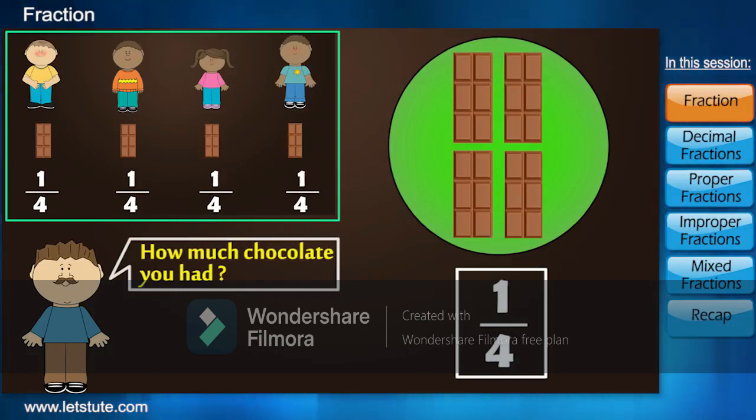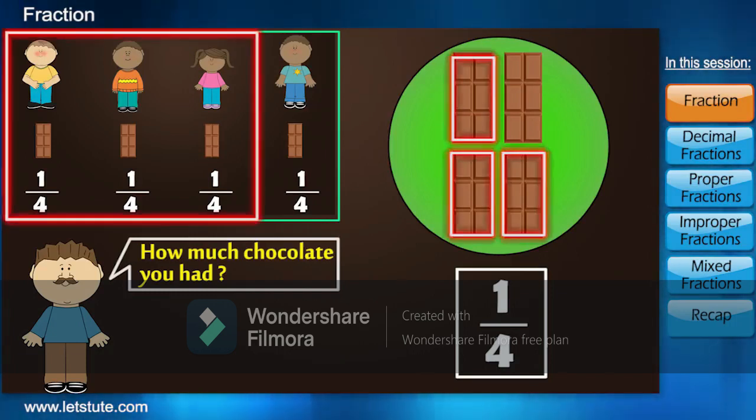Now, can you tell me how much part of the chocolate did all your remaining friends have? Three parts of the chocolate were remaining out of four. So they all had three fourth part of the chocolate.